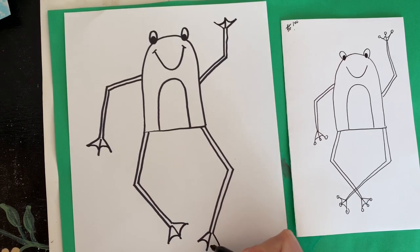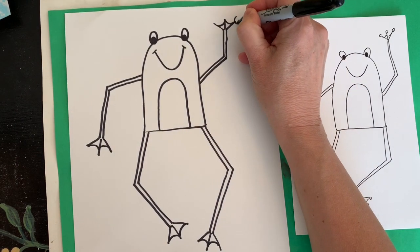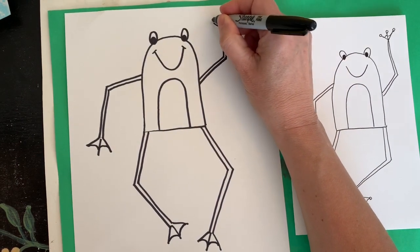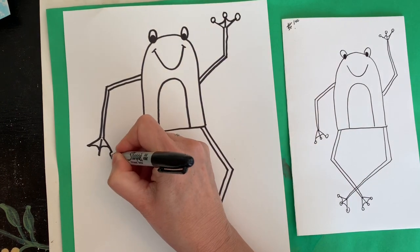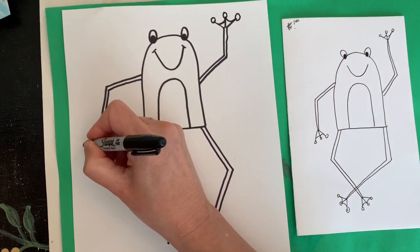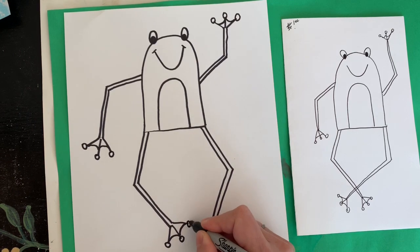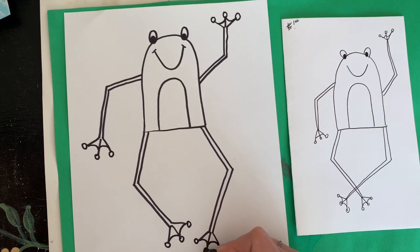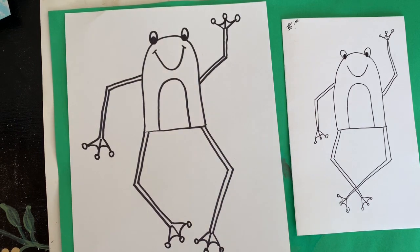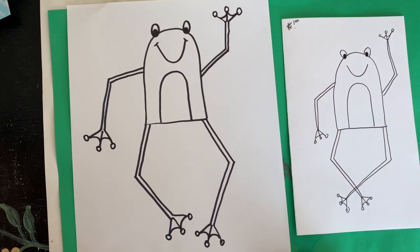That is what helps frogs swim in the water. Now I'm going to add some little toes at the end - one, two, three. Sometimes these little pads are sort of sticky and that's what helps frogs cling on to things. Every toe. That is the end of drawing my frog.